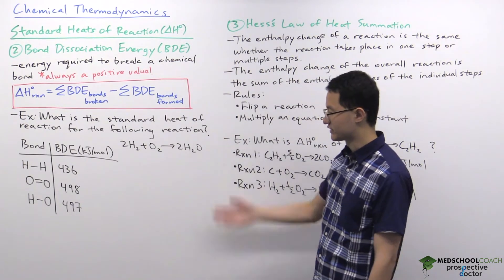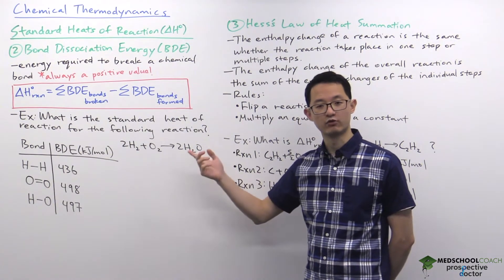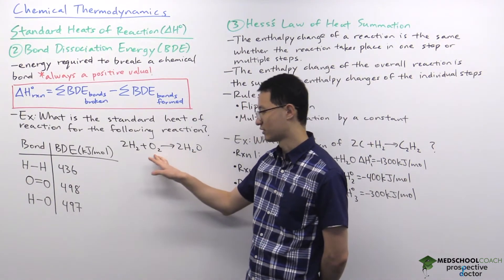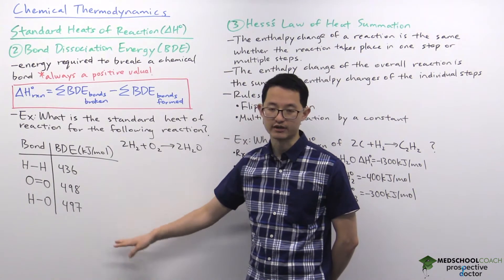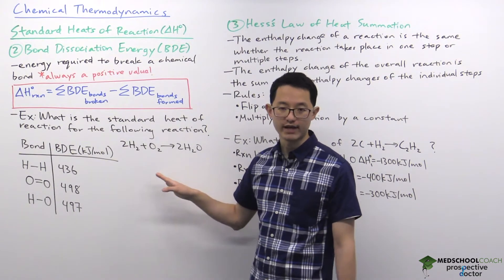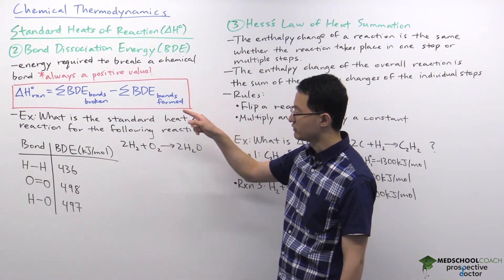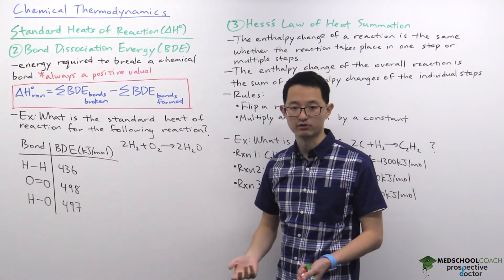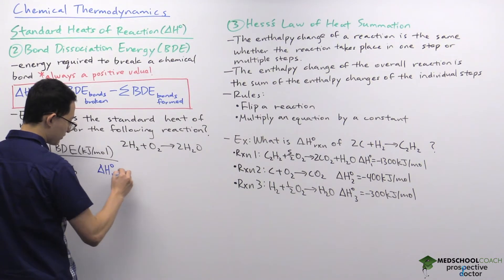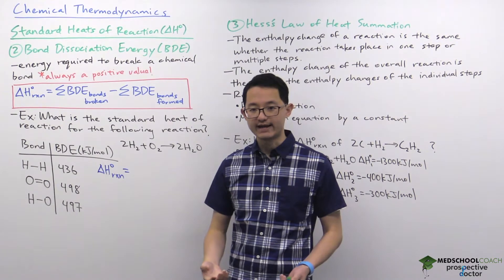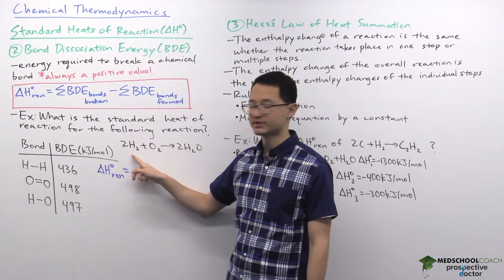To see how this works, we have an example question: what is the standard heat of reaction for the following reaction? We have two molecules of hydrogen plus a molecule of oxygen giving two molecules of water. You're not expected to have bond dissociation energy values memorized, so they'll give you a table of relevant values. To use the equation, we start by identifying all the bonds being broken — the bonds in the reactants — and how many of each.